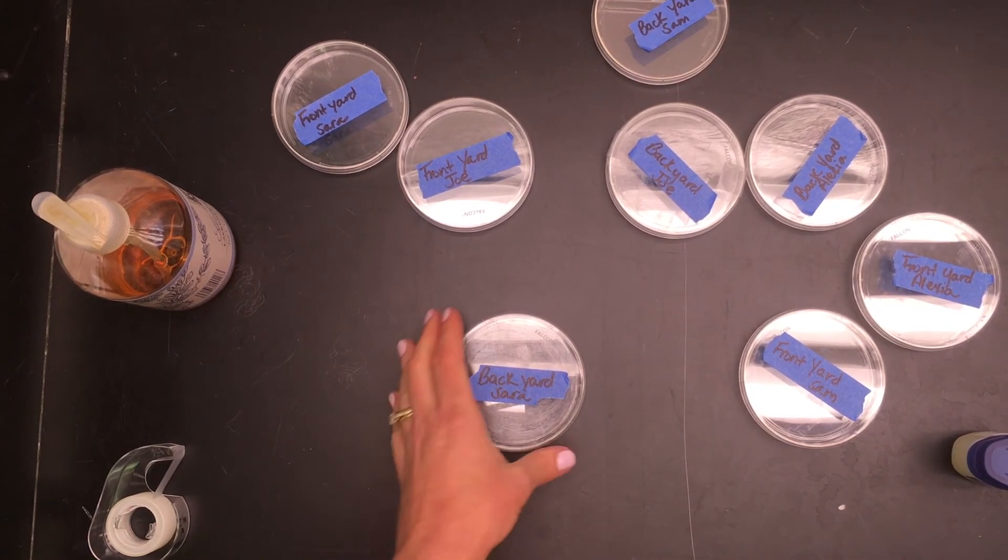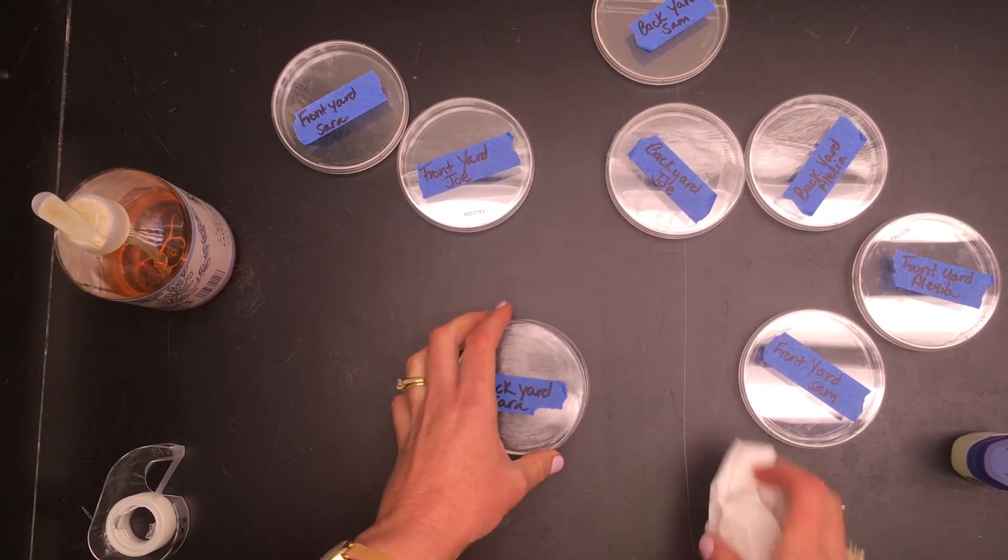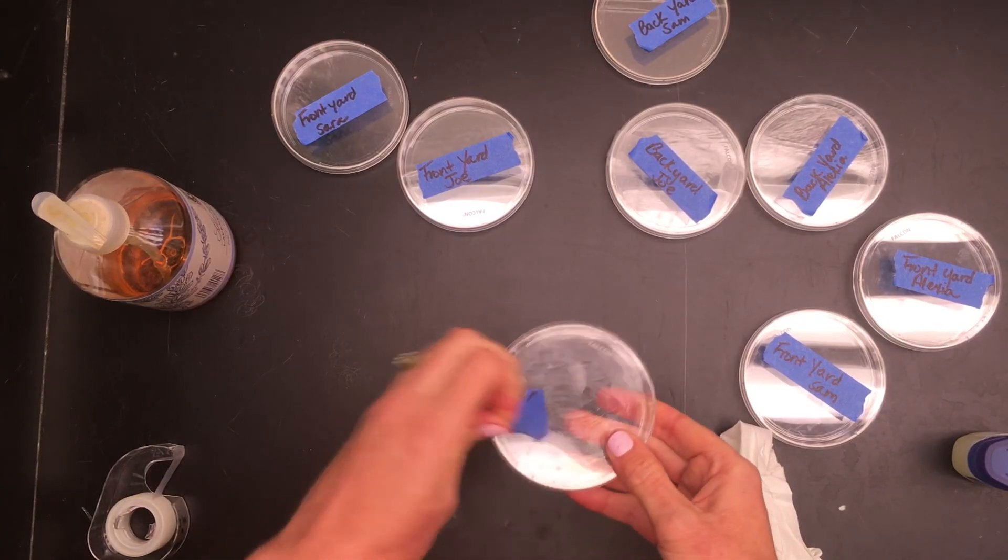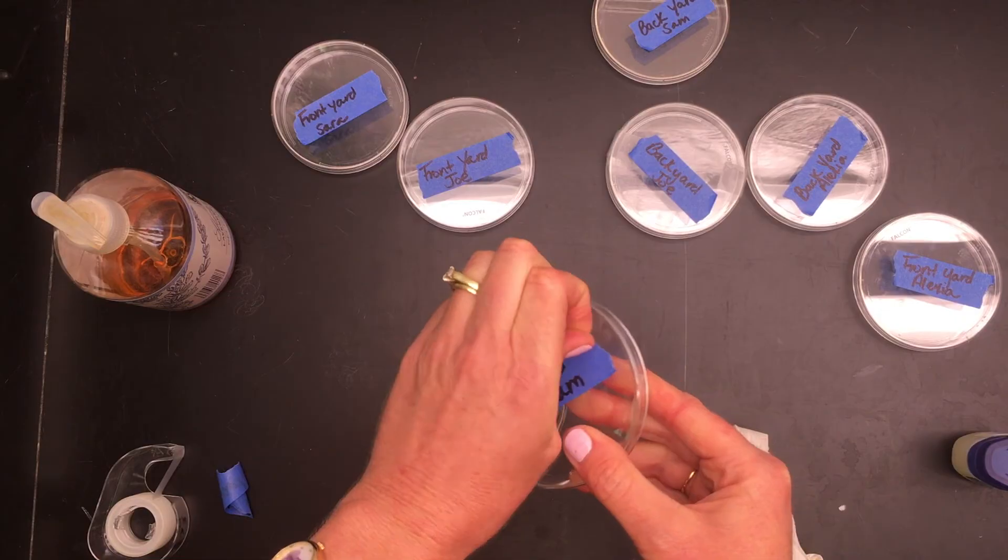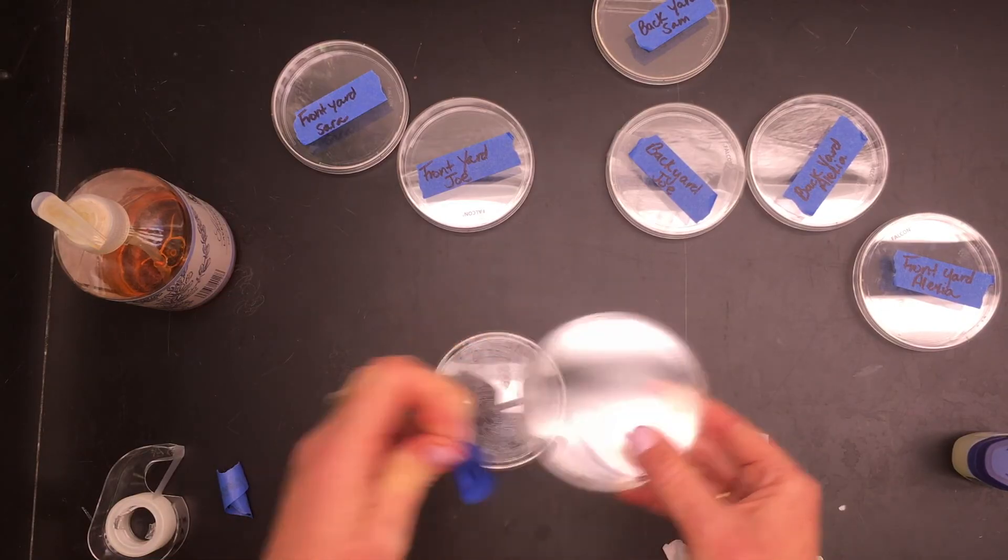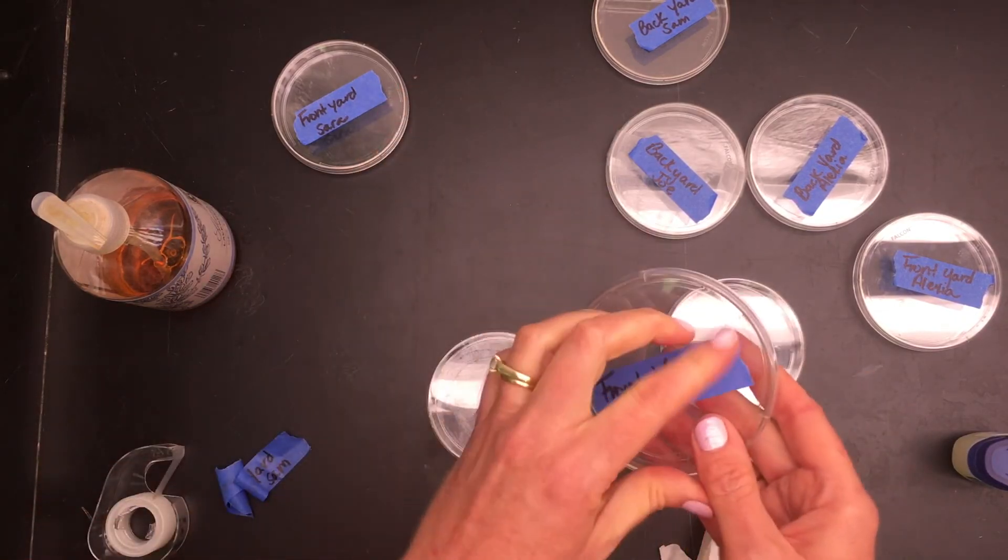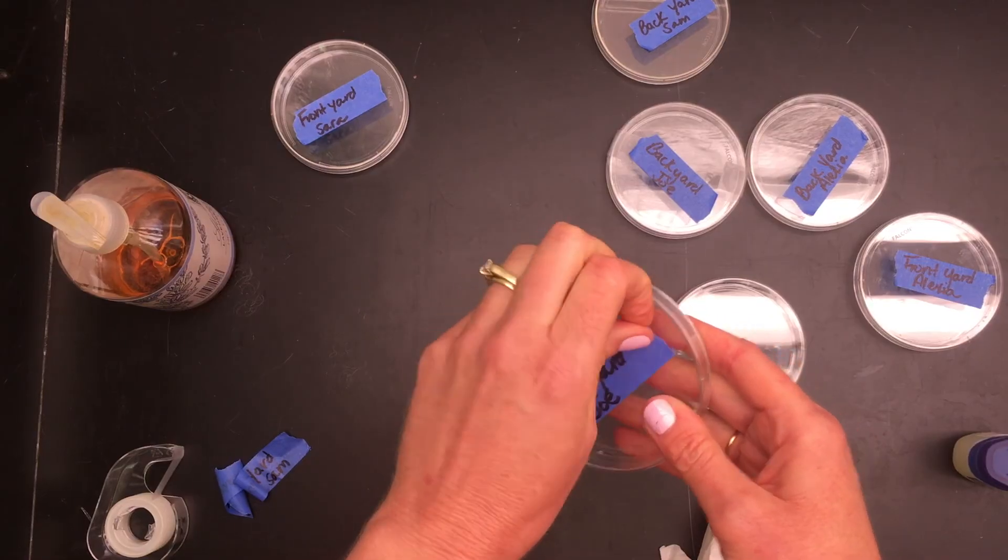When you're done getting all of your data, you need to clean the dishes. So you want to peel the painter's tape off of all of the trays so they can be reused again.